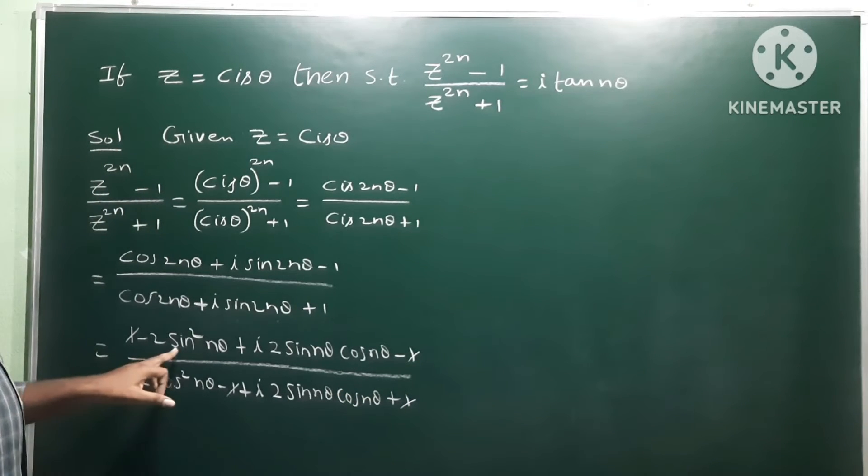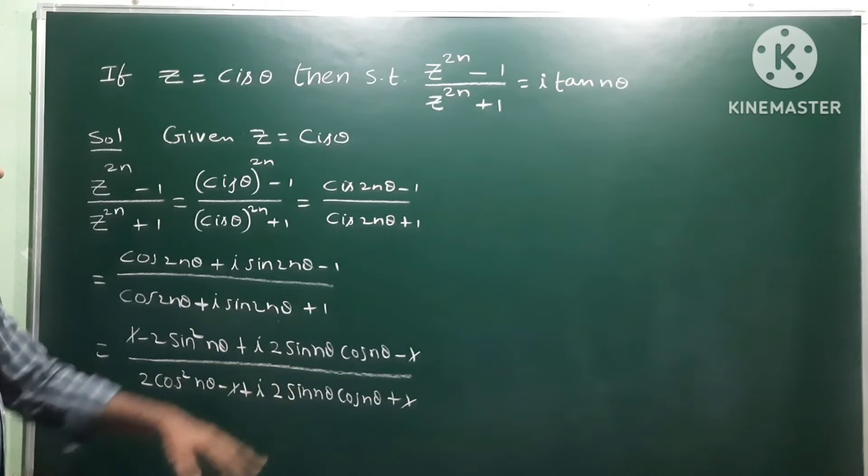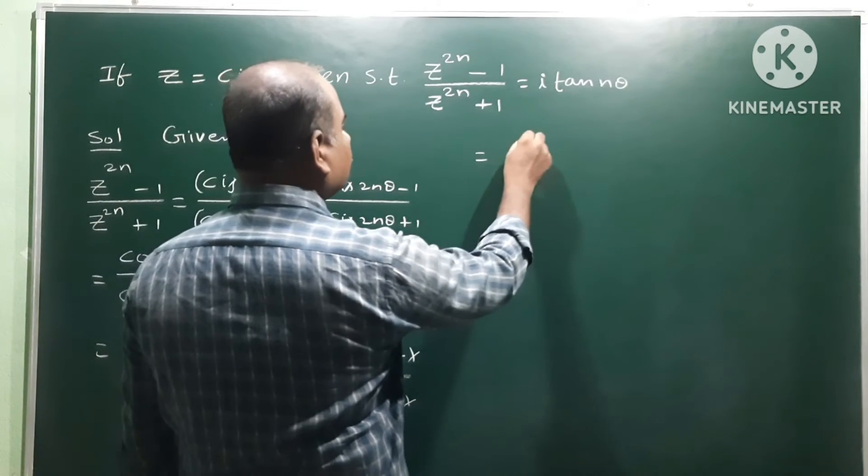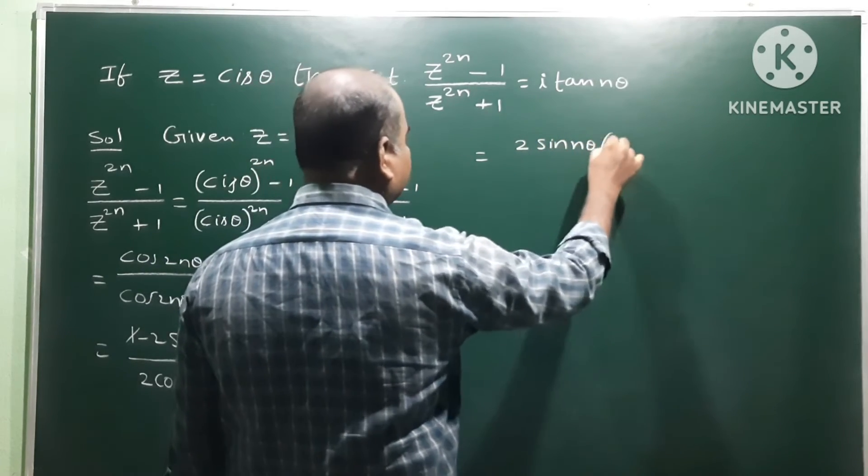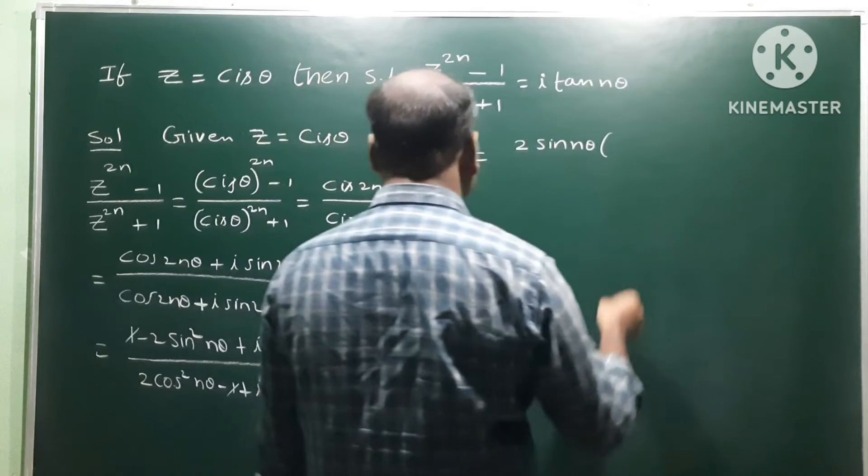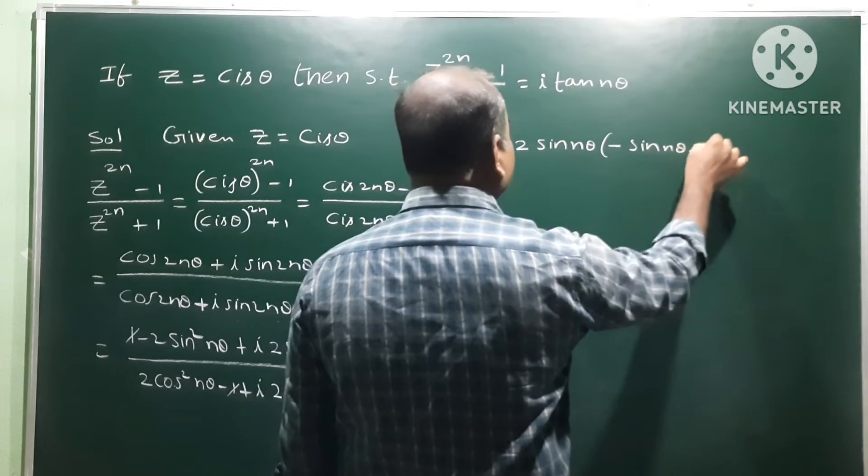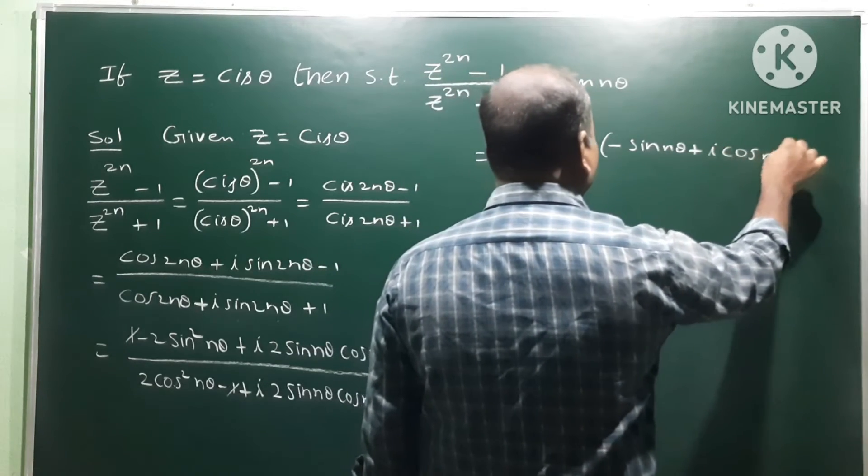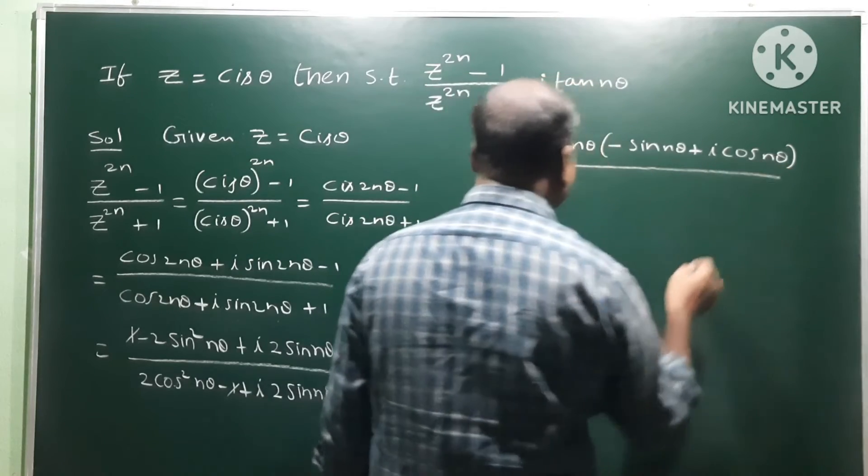in terms of 2sin nθ here, minus 2cos nθ here, minus 2sin nθ plus i cos nθ. In the denominator, take 2cos nθ as common.